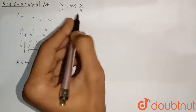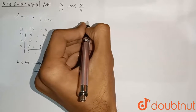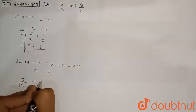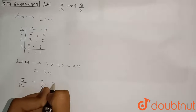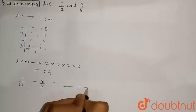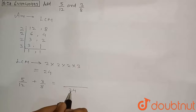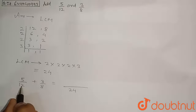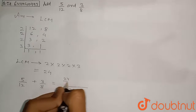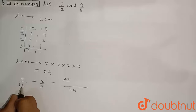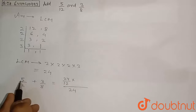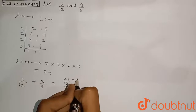Now we add the two fractions: 5/12 + 3/8, with LCM = 24 as the common denominator. For the first fraction, we divide the LCM 24 by the denominator 12, and multiply the result by the numerator 5.